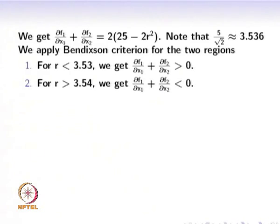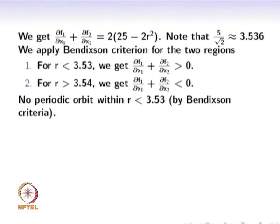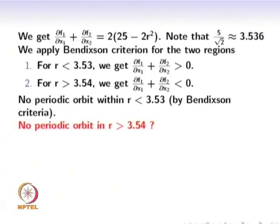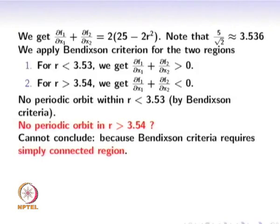In the first region the expression remains positive, and in the second it remains negative. Applying Bendixon criteria to the first region where R < 3.53: there is no sign change, so by Bendixon criteria no periodic orbit exists in that region. For the second region where R > 3.53, the question arises whether we can apply Bendixon criteria. The answer is no.